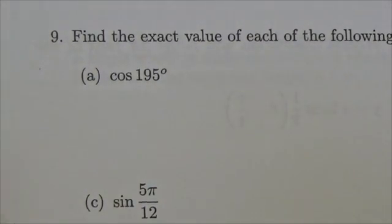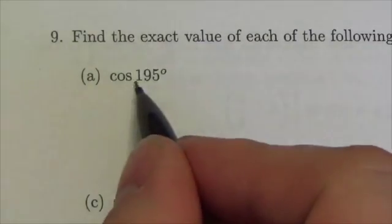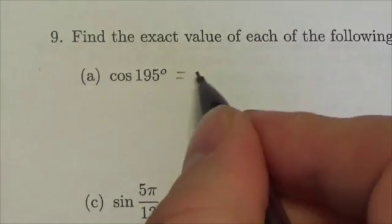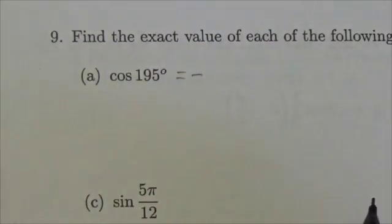Anytime I approach problems like this, I want to know what the reference angle is. Now, 195 is going to be in quadrant 3, so I know cosine is going to be negative in quadrant 3.